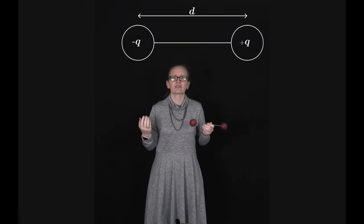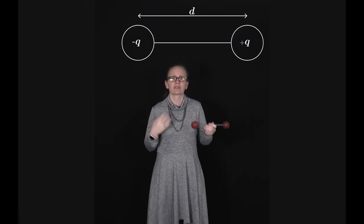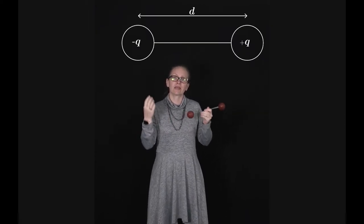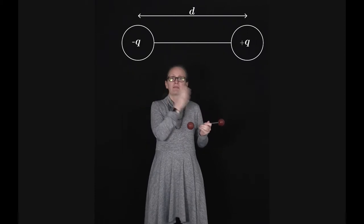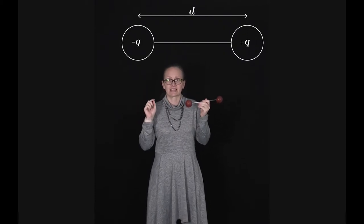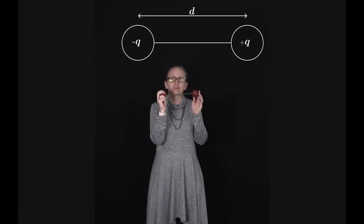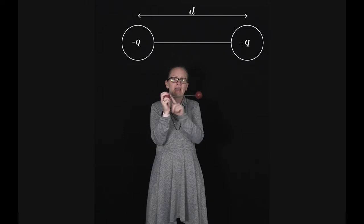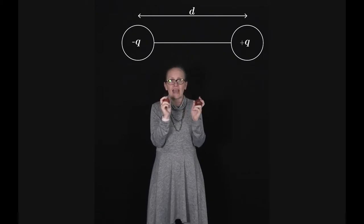We've already looked at electric dipoles and their associated electric fields. Just as a reminder, an electric dipole consists of two equal and opposite charges, plus q and minus q, separated by a distance d. We can imagine them as joined by a chemical bond along the axis between them.